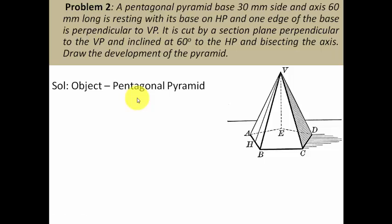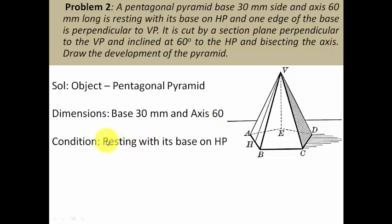The object is a pentagonal pyramid having a base of 30mm and axis 60mm. This pentagonal pyramid has been kept with its base on HP. The true shape of the base will only be seen from the top, so you have to begin by drawing the top view first. While drawing the top view, you have to keep one edge of that base perpendicular to VP or perpendicular to the XY line.